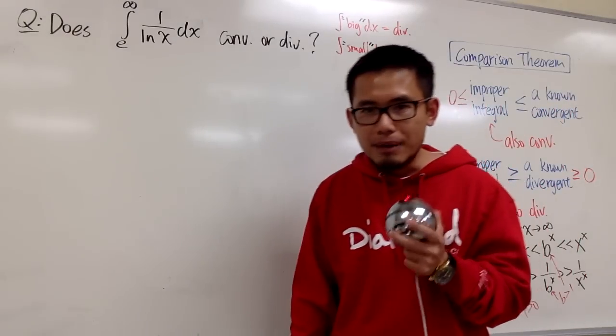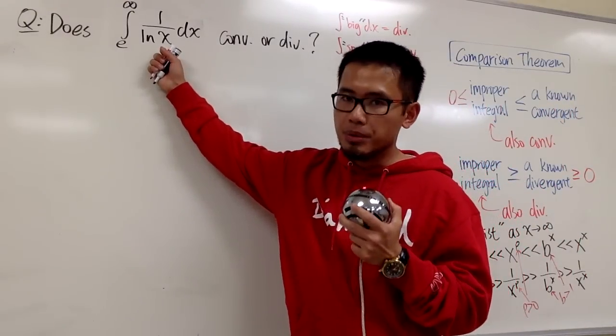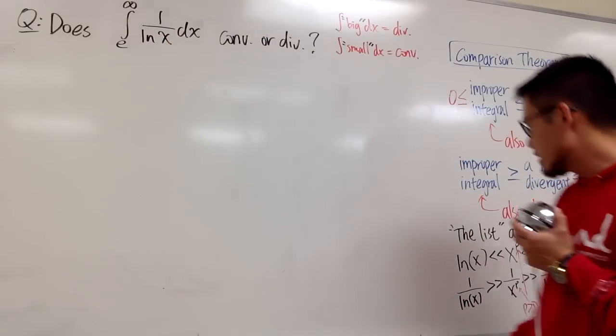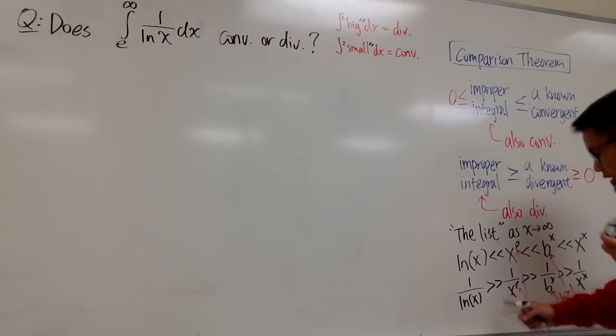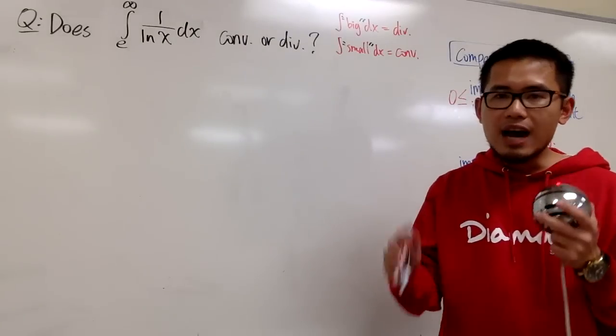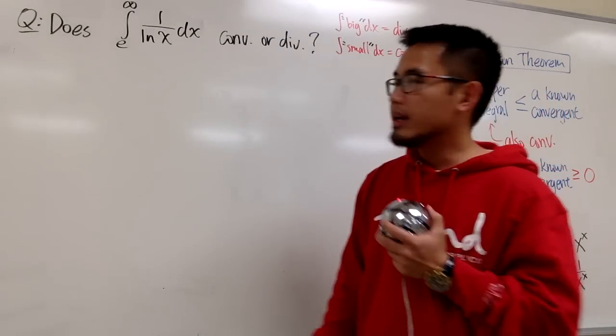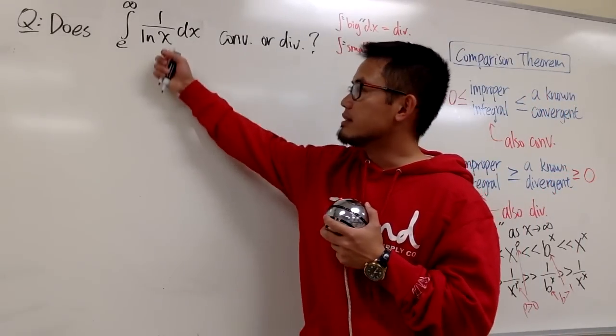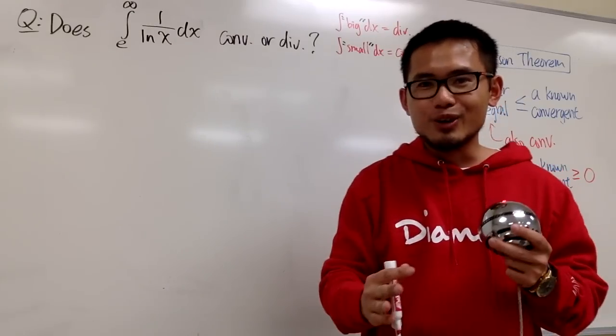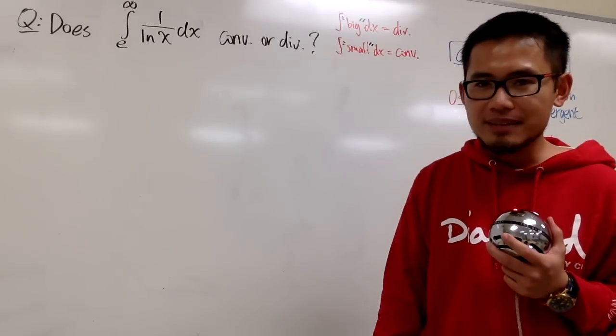Here, we are dealing with a big enough function, isn't it? It seems to be a big function because the list suggests so. Therefore, I suspect this right here to be a divergent. Once again, I suspect this right here to be a divergent because from the list, it's telling me 1 over ln(x) is a pretty big function.